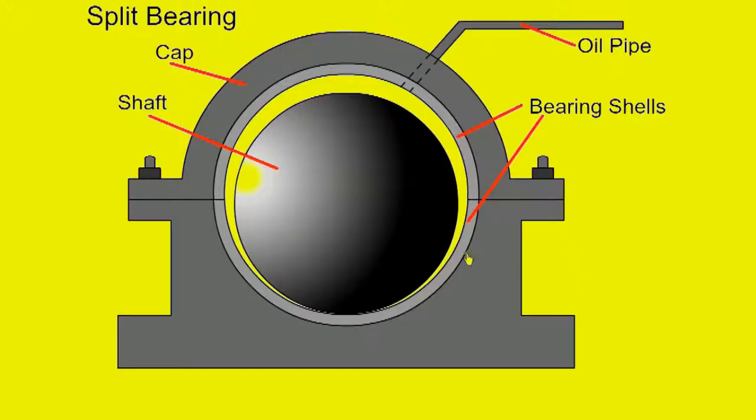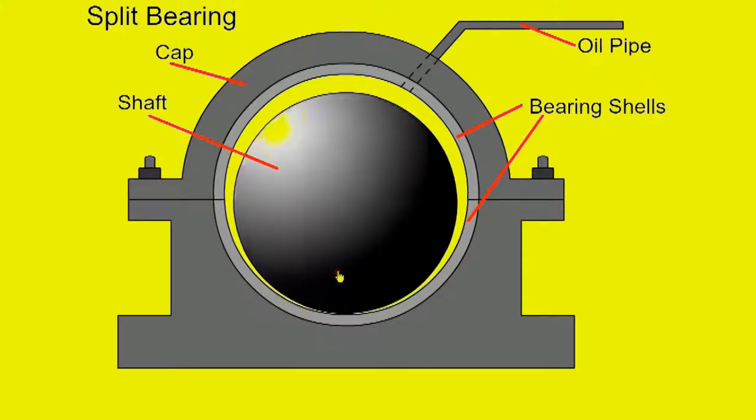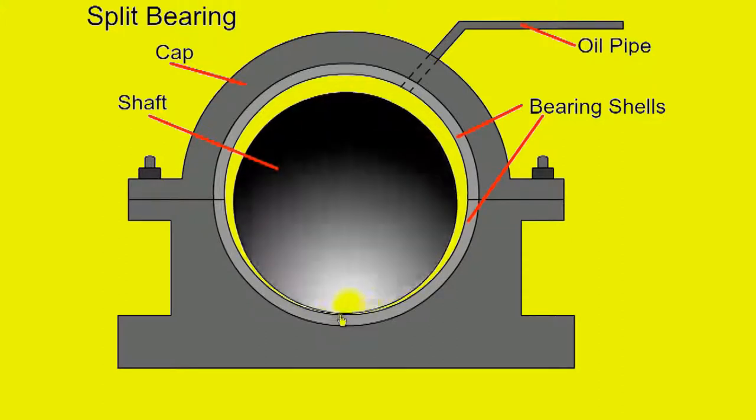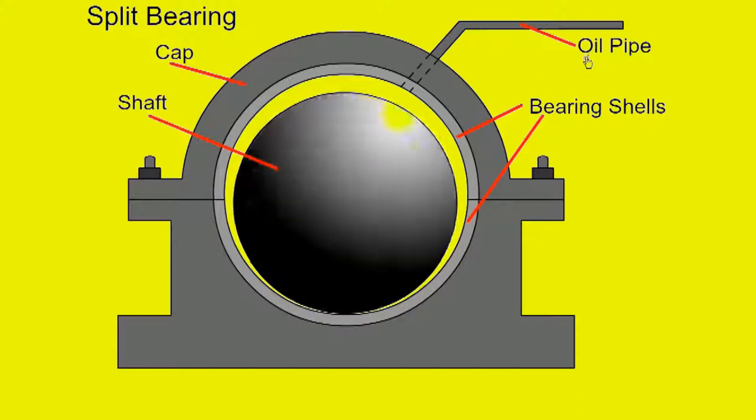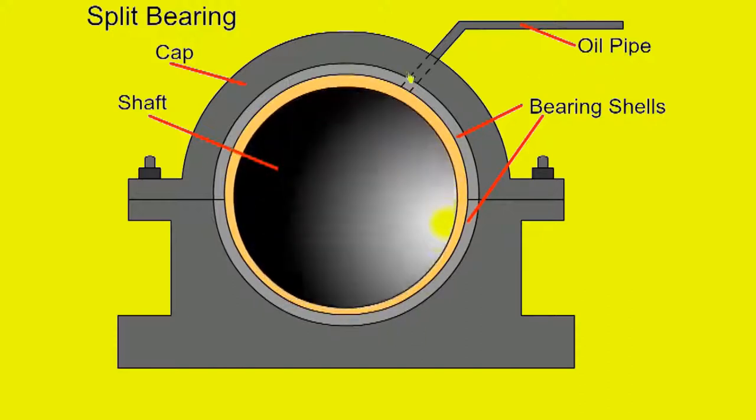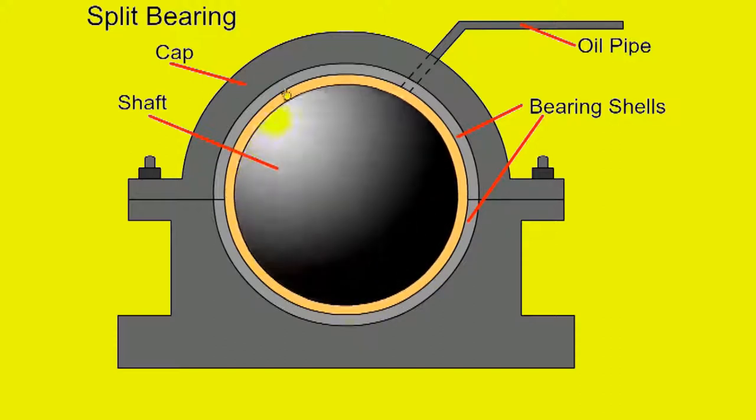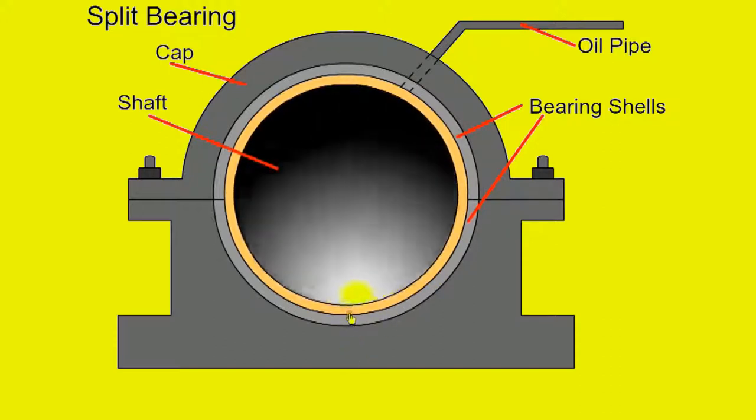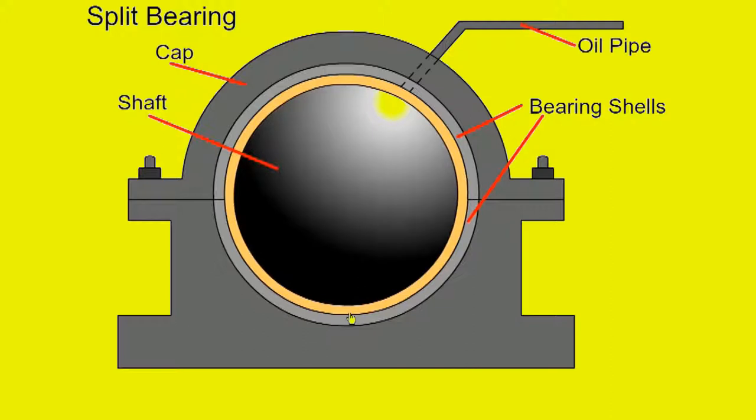The bearings in an engine use hydrodynamic lubrication. There is a very small clearance between the shaft and the bearing journal. When the engine is started the shaft is running without lubrication for a short period. When oil is introduced the film of oil is dragged around by the shaft and the shaft is then centred in the bearing housing. Now we have hydrodynamic lubrication.